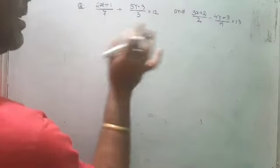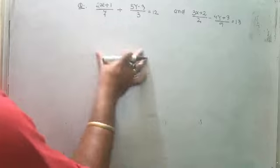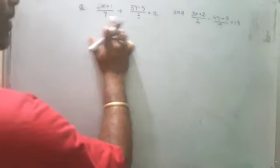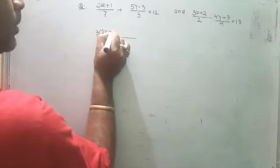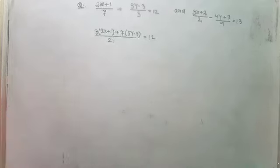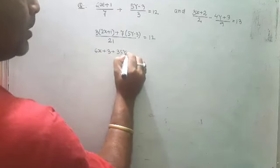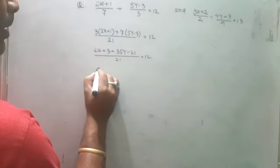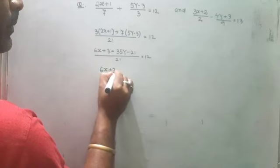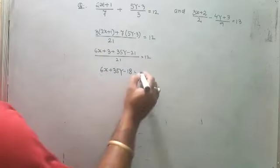When equations are in fraction form, you need to convert them to whole numbers first. The LCM of 7 and 3 is 21, so multiply through to simplify. Multiplying gives 3 times (2x plus 1) and 7 times (5y minus 3) equals 12 times 21. This gives 6x plus 3 and 35y minus 21 by 21 equals 12, so 6x plus 35y plus 3 minus 21 equals 21 times 12.